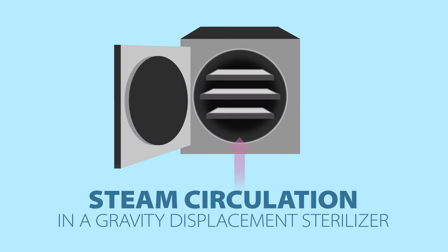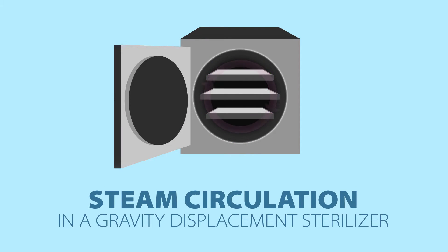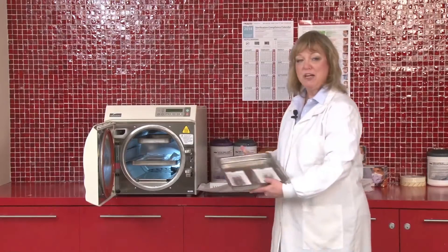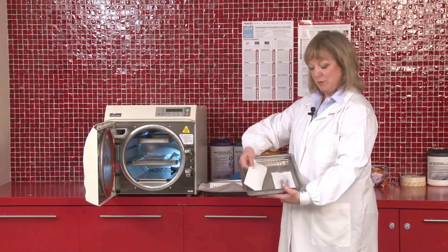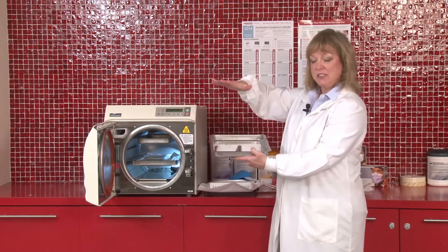Remember when we talked about how the steam enters into a gravity displacement sterilizer. It enters in from the top and the sides. Therefore, if you're using a paper and plastic pouch, we would not be loading it plastic side up. We would be loading the pouches paper side up because this allows the steam to enter in from the top.